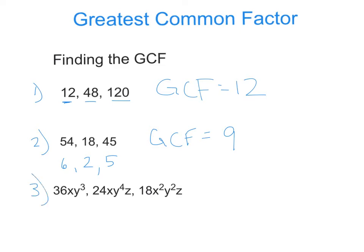Our last example has variables as well. So, we look at our numbers first, and we say, 36, 24, 18, all have what in common? We think about that for a little bit, and we're going to say, okay, they're all even.